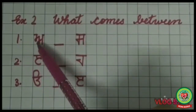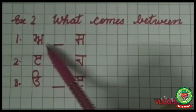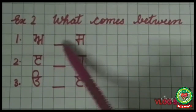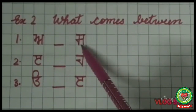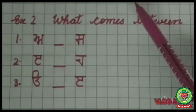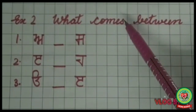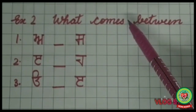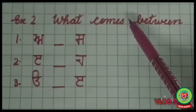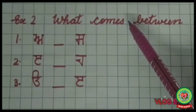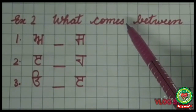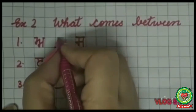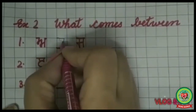The first one is: Aira, blank, Sassa. You can read the line — Ura, Aira, Iri, Sassa — so the answer is Iri.